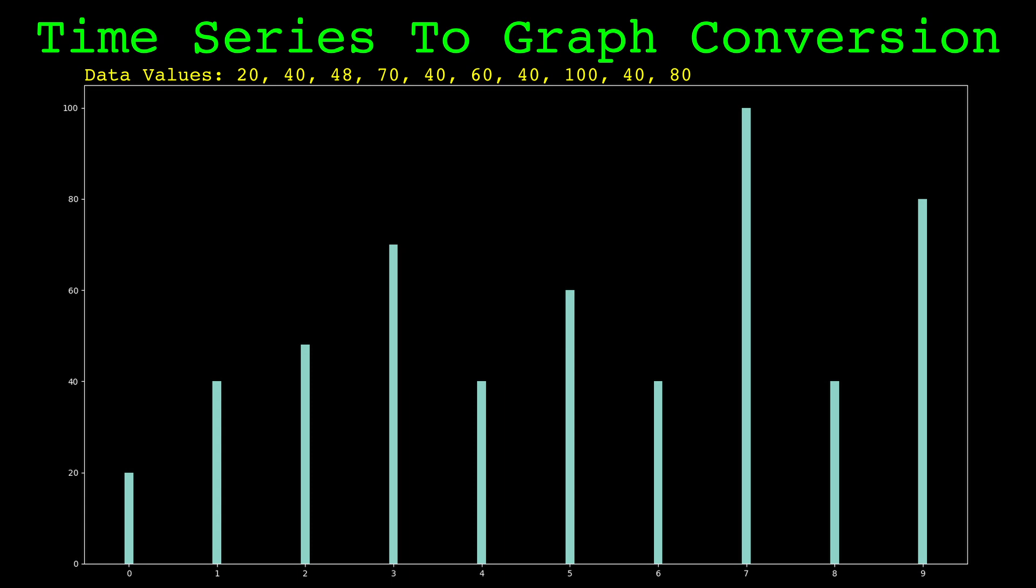Each value in the time series will correspond to a node in the resulting graph. There will be a link between the nodes if there is an uninterrupted line of sight between the values. Let's consider the bar on the fifth index. There is a clear line of sight between this bar and the bar on the third index. This is how links on the visibility graph are created.